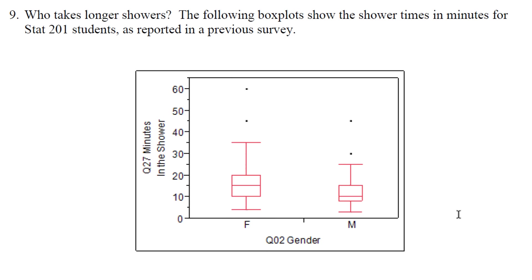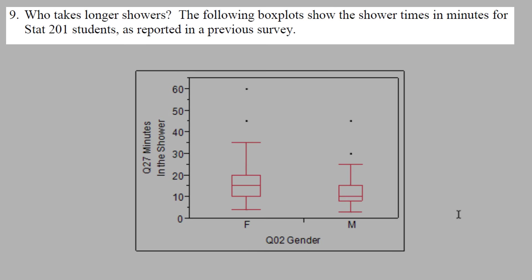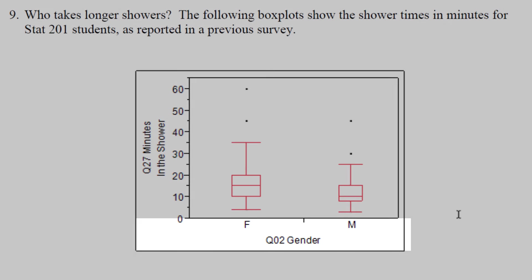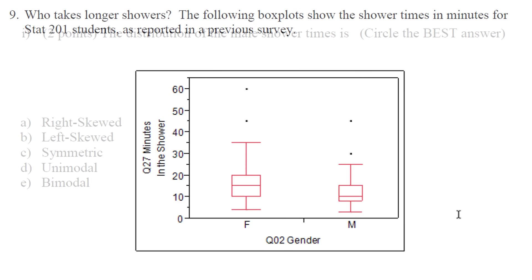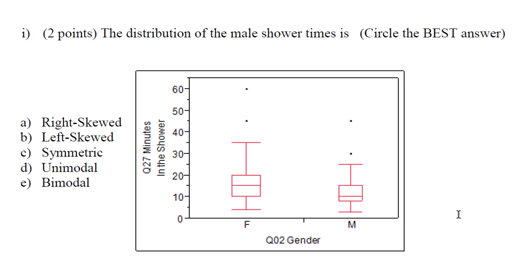Question number nine goes over box plots. We have a view of side-by-side box plots, which is something you might have done on your project. We have males and females and how long they spent in the shower. Males and females is categorical and how long they spent in the shower is quantitative. Let's look at the male shower times and see what would best describe this distribution.